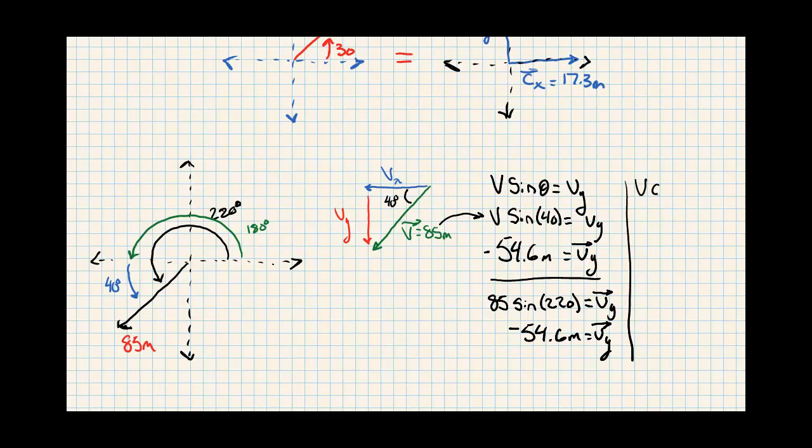Let's go ahead and try and find the horizontal component. V cosine theta equals Vx. And then we've got 85 cosine of 40 equals Vx. So 65.1 meters equals Vx. And we're stuck with the same situation. It's in the negative direction. It's pointing the negative direction down the X axis. But we ended up with a positive number. So this is the magnitude of our vector. It does not tell us the direction on it. So we've got to remember that that's our negative direction. Put a negative sign back on it.